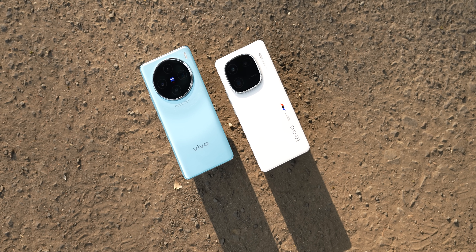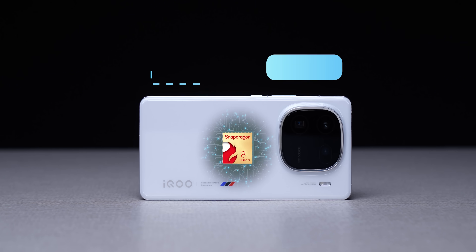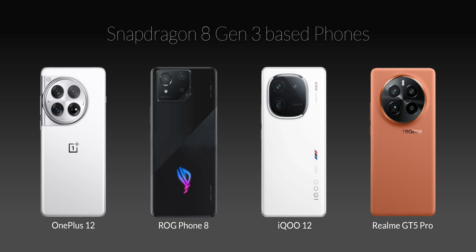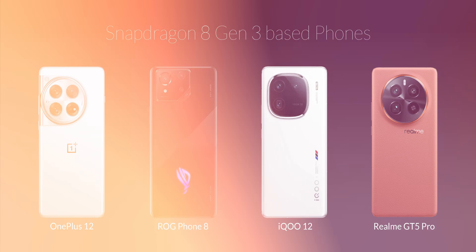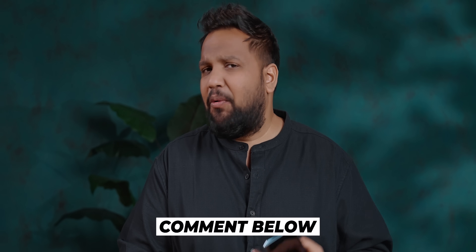Our final analysis is that the Snapdragon 8G3 and the Dimensity 9300 are extremely close in terms of performance. But the Snapdragon 8G3 is an easier beast to tame due to its core architecture — the Dimensity 9300 can run hotter and lose more battery life, and it's not tamed as well. Another consideration is that most OEMs will choose the Snapdragon 8G3 for their flagship phones. Apart from the Vivo X100 series, we may not see many phones with the Dimensity 9300, at least in India. It'll be interesting to see if that changes.